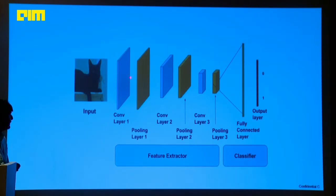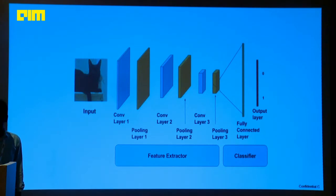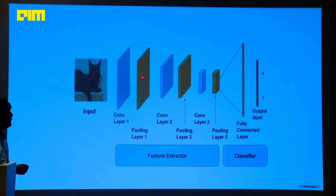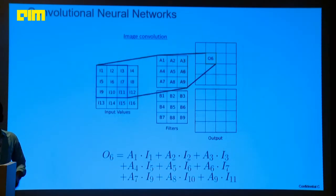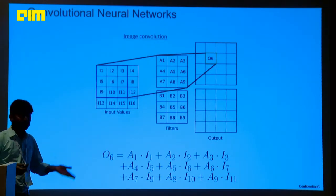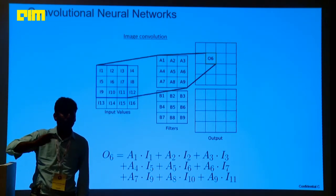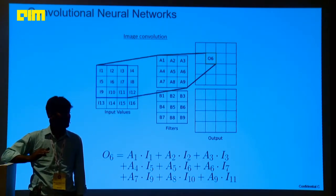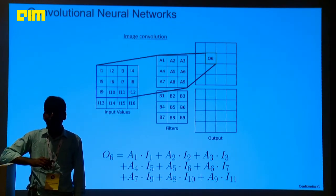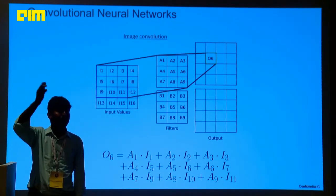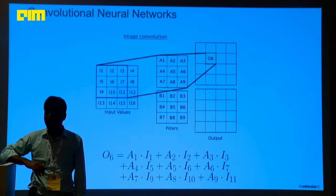With respect to image convolution, in traditional approaches, if I want to detect edges or do smoothing operations, there are concepts called low-pass filter and high-pass filter. High-pass filters identify the edges and corners in the images. There are different types of image convolution kernels: Laplacian kernel, Sobel kernel, Previt kernel.